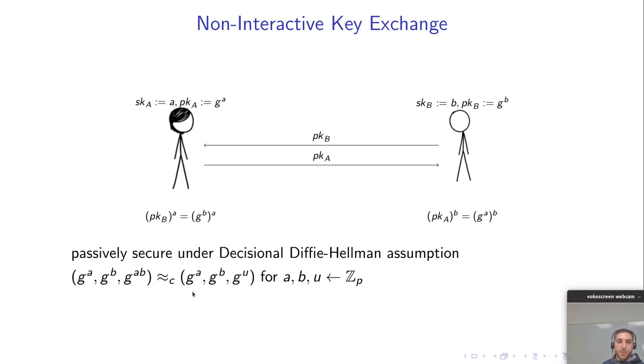is computationally indistinguishable from G to the A, G to the B, G to the U for AB and U uniformly rendered from set P where P is the prime order of the group.